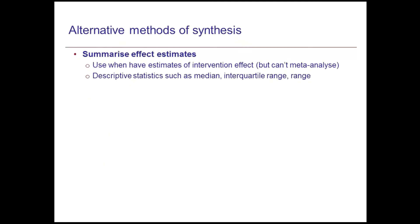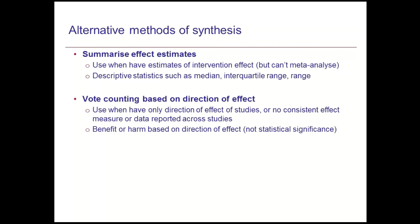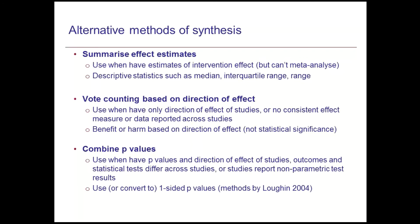For summarizing effect estimates, we can do this when we have estimates of the intervention effect but can't meta-analyze; this allows us to provide descriptive statistics such as the median or range. For vote counting based on direction of effect, we do this when we only have the direction of effect or there's no consistent effect measure across studies, looking for benefit or harm without focusing on statistical significance. For combining p-values, we do this when we have p-values and direction of effect, when outcomes and statistical tests differ across studies, or when studies report nonparametric test results — converting to one-sided p-values as required.